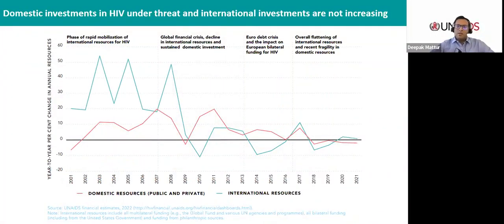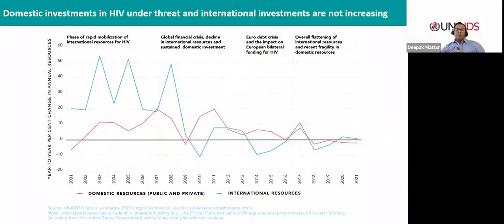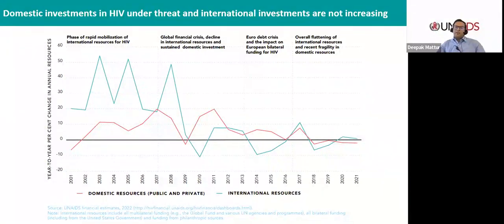Domestic resources were the main driver of growth in total resources during the last decade. However, the growth of domestic resources became smaller from mid-2010 onwards and halted in 2018. These are challenging trends because domestic investments in HIV account for 60% of total resources. International resources were about 6% lower in 2021 than in 2010, having declined steadily since 2012-2013, despite sustained high levels of funding from the United States government and the Global Fund, which increased by about 36% and 56% respectively since 2010.